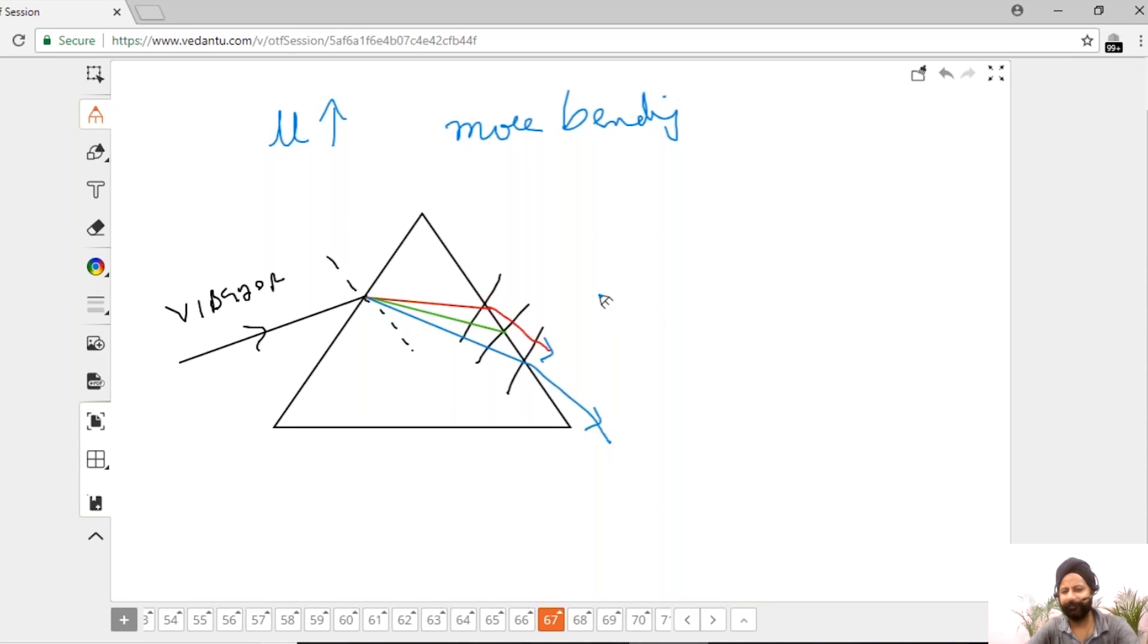These are the normals. Now red light will bend away from normal. Blue light will bend more. So look at this, these are separated out because of different refractive indices. Is this clear, Shreya? Now is it clear, everybody? Not just Shreya, everybody.